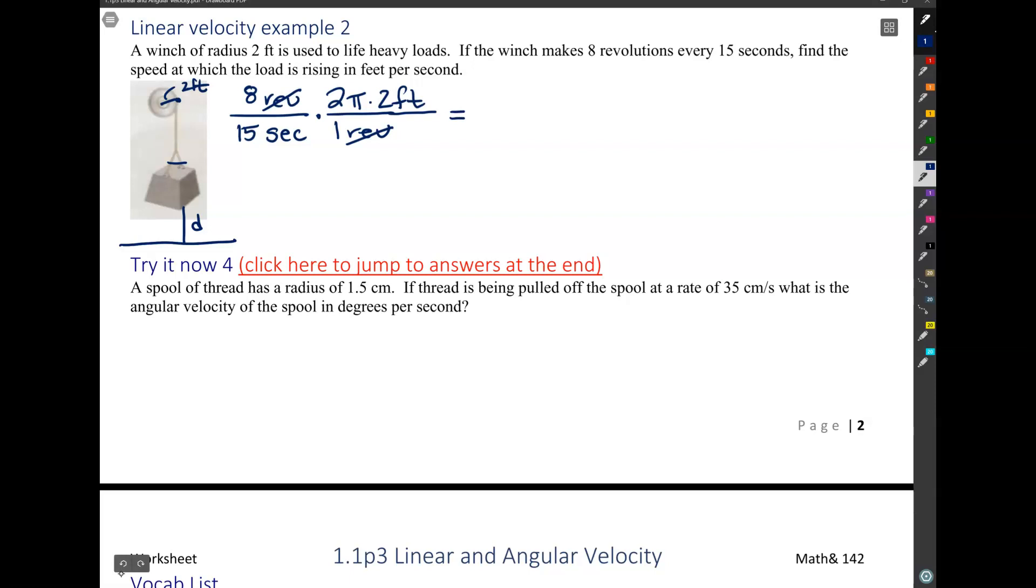So we have 8 times 2, 16, 32π over 15 feet per second.